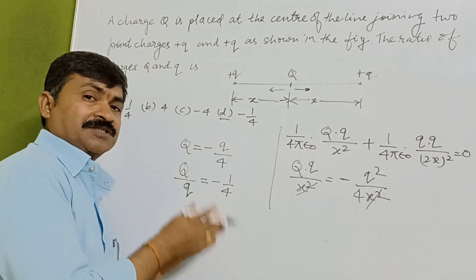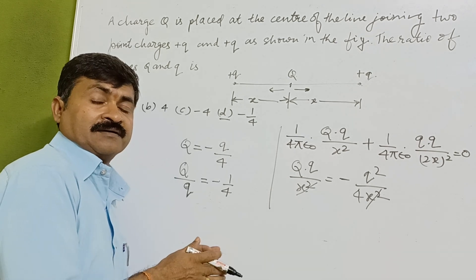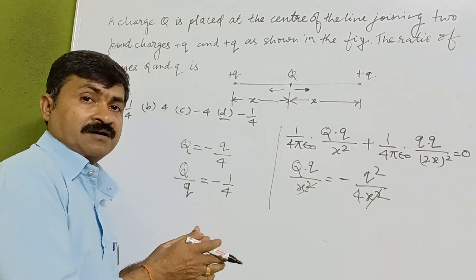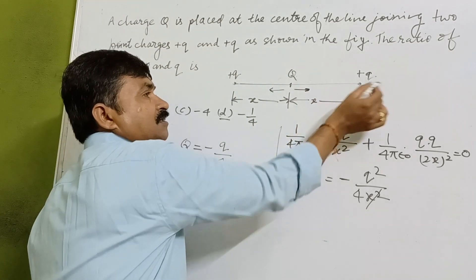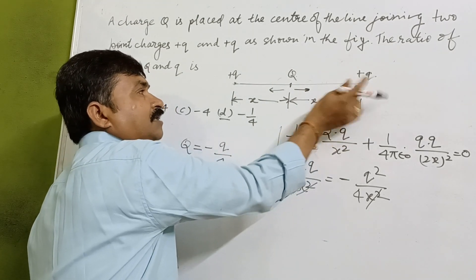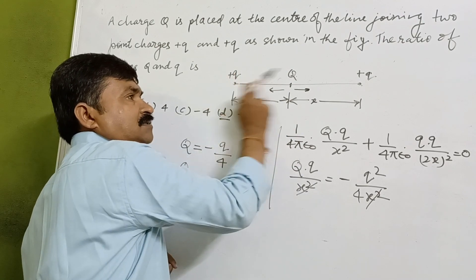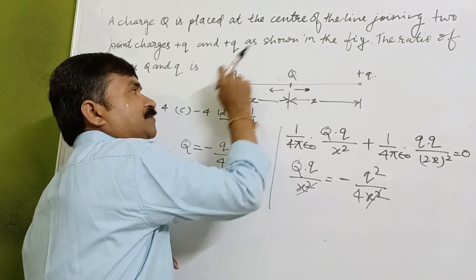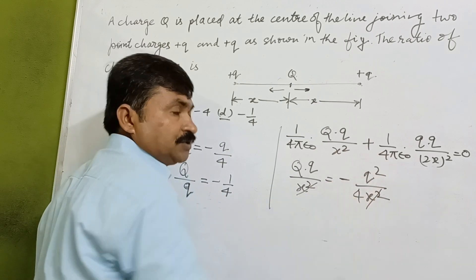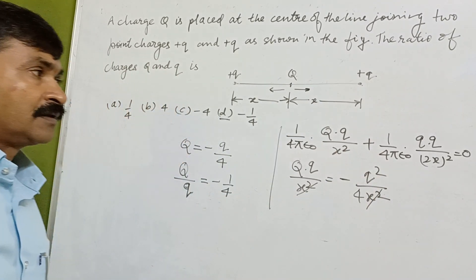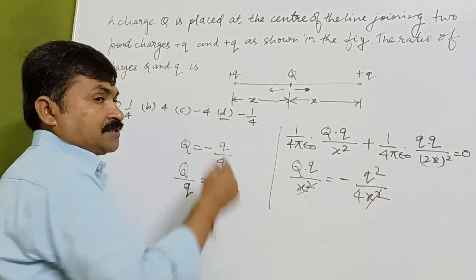So here it is a question which is based on Coulomb's law. Simply these forces which are acting on this, we have considered on this charge or you can consider this charge. The force because of this, because of this on this, and because of this on this must be equal to zero. The forces are opposite.